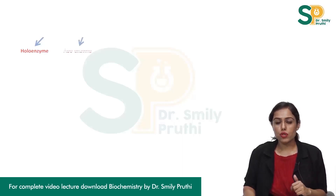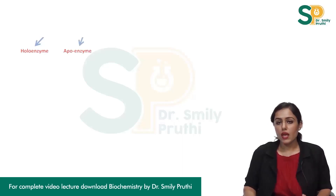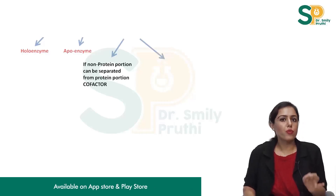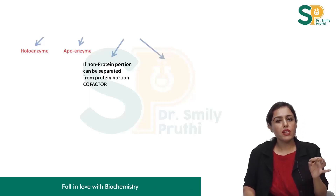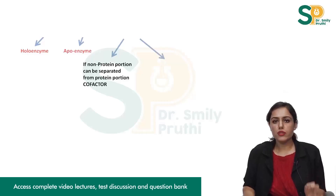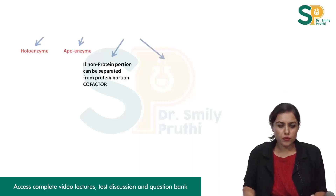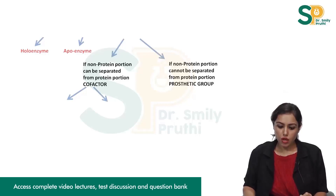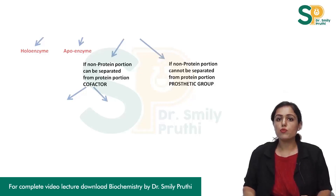The protein portion is known as apoenzyme, and the non-protein portion is of two types. If the non-protein portion can be separated from the protein portion, then it is known as cofactor. But if the non-protein portion cannot be separated from the protein portion, then it is known as prosthetic group.